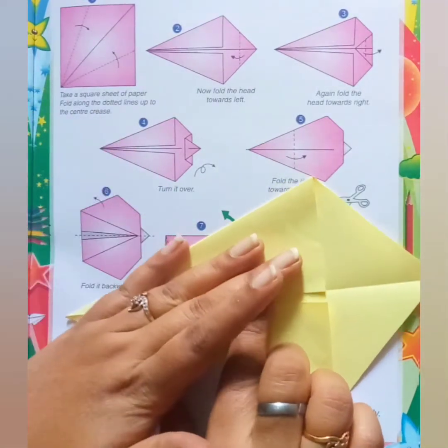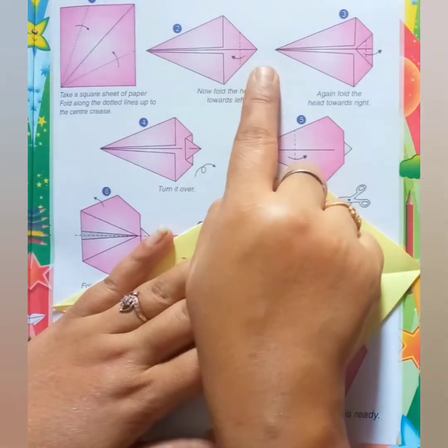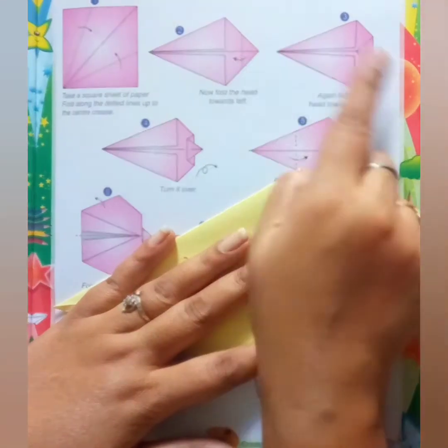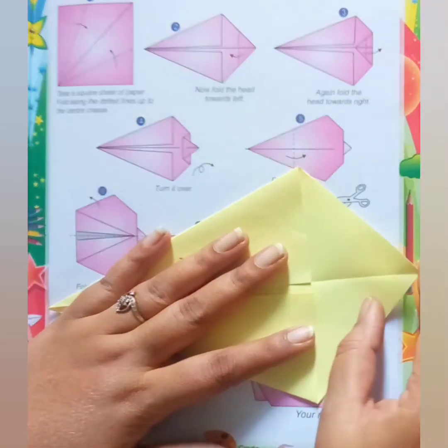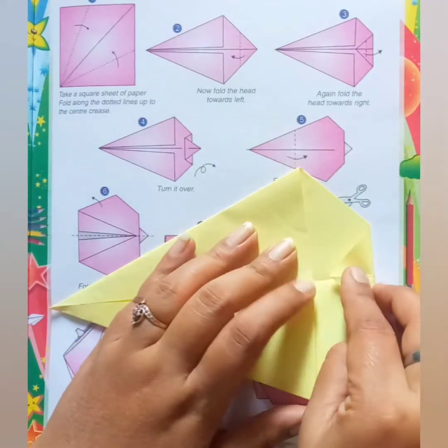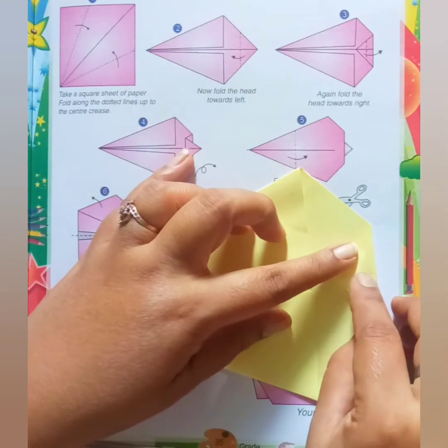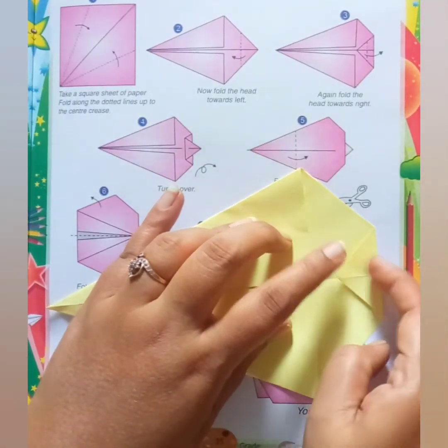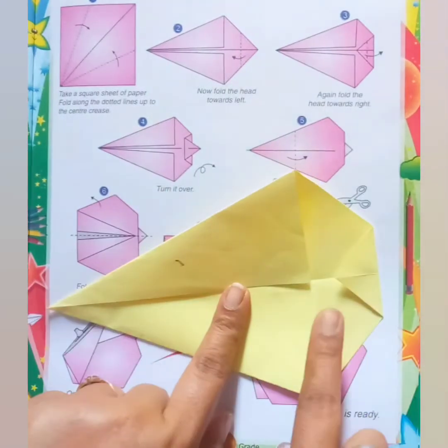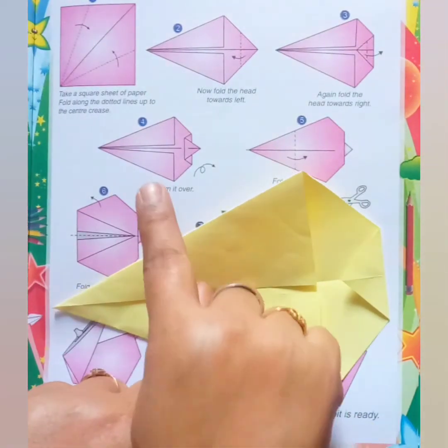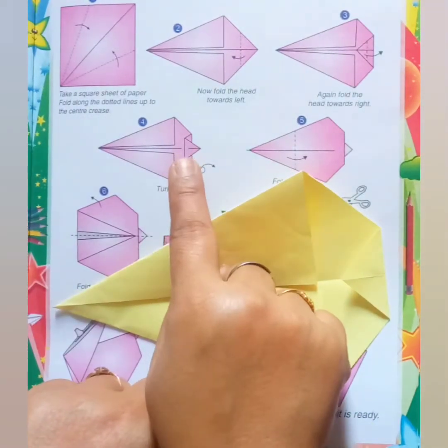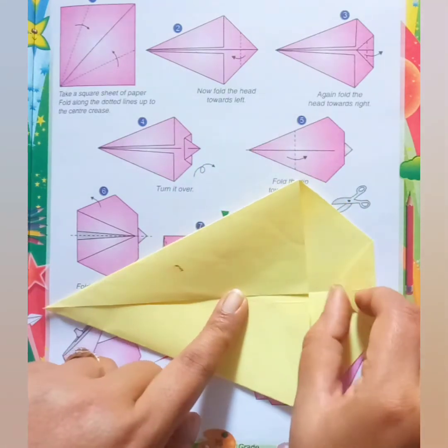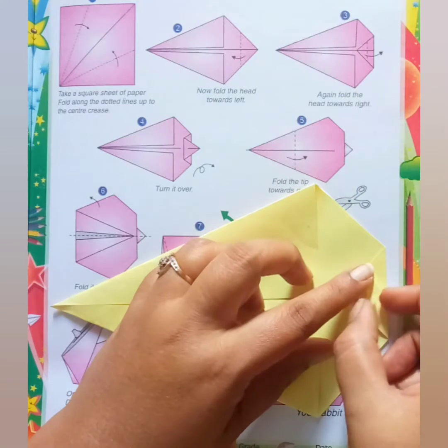Now third step, we have to fold this portion inside. Just match the center line and fold this portion, like this.